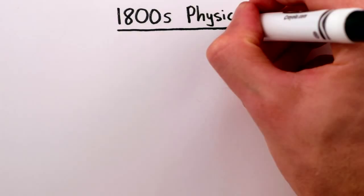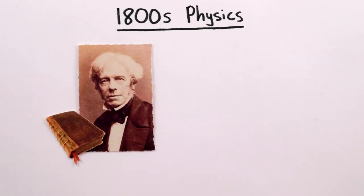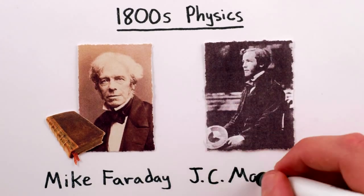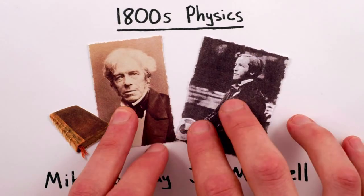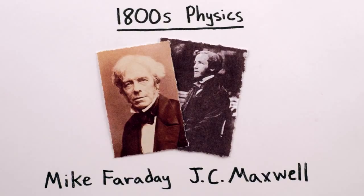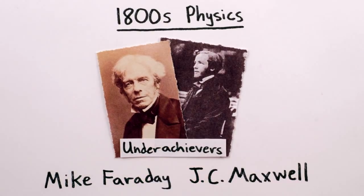But into the world of physics came a London bookbinder's apprentice named Michael Faraday, and a young Scottish laird named James Clerk Maxwell. Together, Magnetic Mike and JC made one of the greatest discoveries of all time.